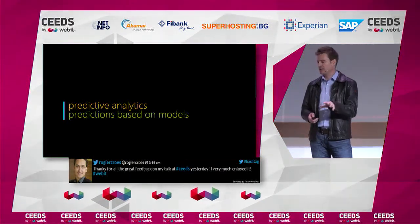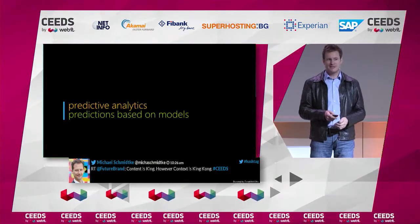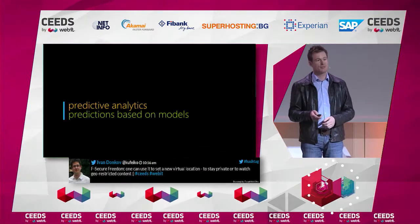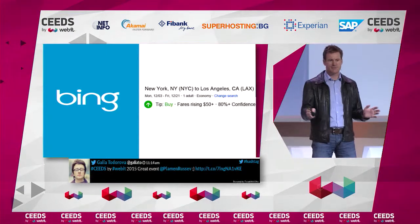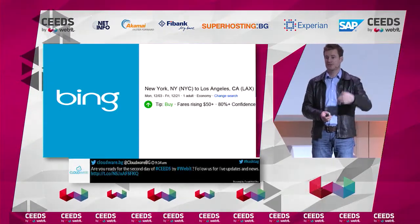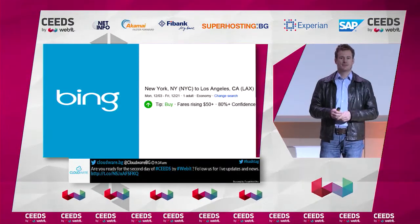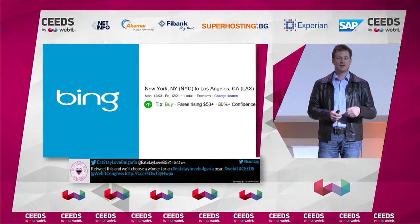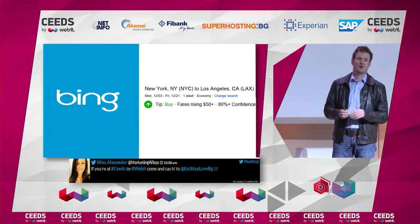So we talk about something which is called predictive analytics — basically you make predictions based on models. And these predictions are never going to be 100% accurate. It's a key point: you make predictions with a probability. For instance, Bing analyzes historical flight data, and when you do a search for a flight, we make a prediction whether this flight is going to increase in price or not — with an 80% probability this flight is going to be $50 more or more if you're not buying it now.